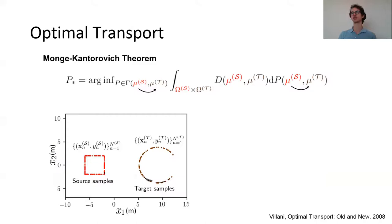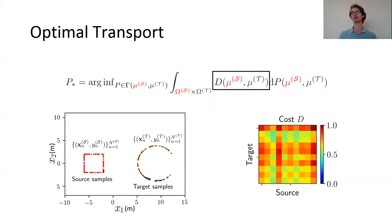In this example we have two empirical distributions: a red square on the left as the source and a brown circle on the right as the target, both representing LIDAR hits. Our goal is to find an optimal association between the two distributions. To do this we must firstly determine a cost matrix D that represents the distances each source sample must travel to the target according to some metric.